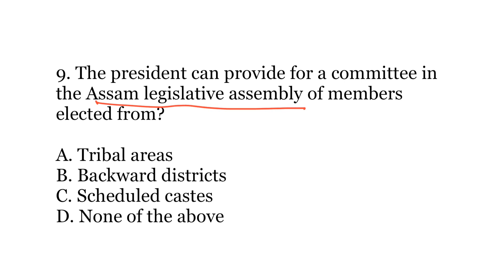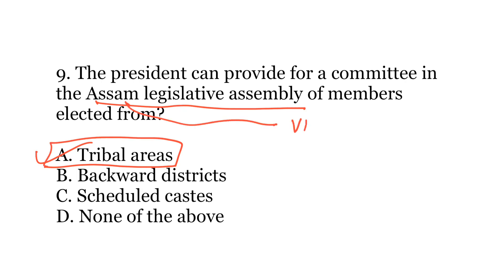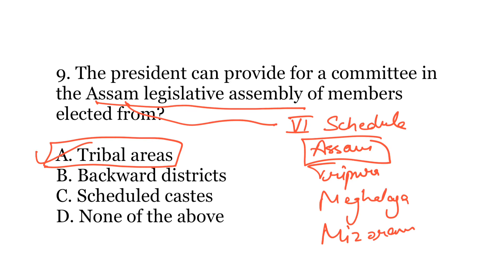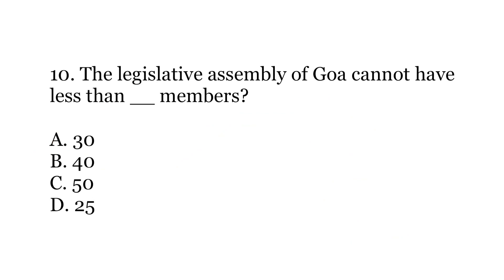Ninth question: The President can provide for a committee in the Assam legislative assembly of members elected from which areas? Options: A) Tribal areas, B) Backward districts, C) Scheduled castes, or D) None of the above. The answer is A) Tribal areas. Assam is one of the four states with special provisions under the Sixth Schedule of the Constitution — the four states being Assam, Tripura, Meghalaya, and Mizoram. The President can nominate a committee in the Assam legislative assembly elected from tribal areas.